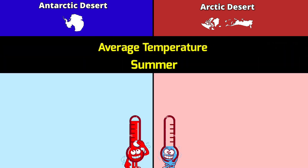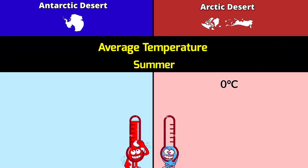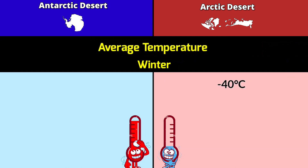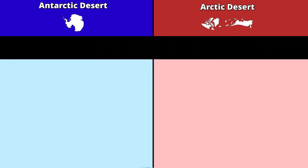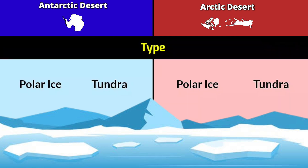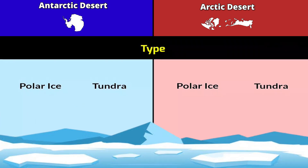Average temperature: for summer, Antarctica Desert is 0 degrees Celsius; Arctic Desert is minus 28.2 degrees Celsius. For winter, Antarctica Desert is minus 40 degrees Celsius; Arctic Desert is minus 60 degrees Celsius. Type: polar ice and tundra for both Antarctic and Arctic Deserts.